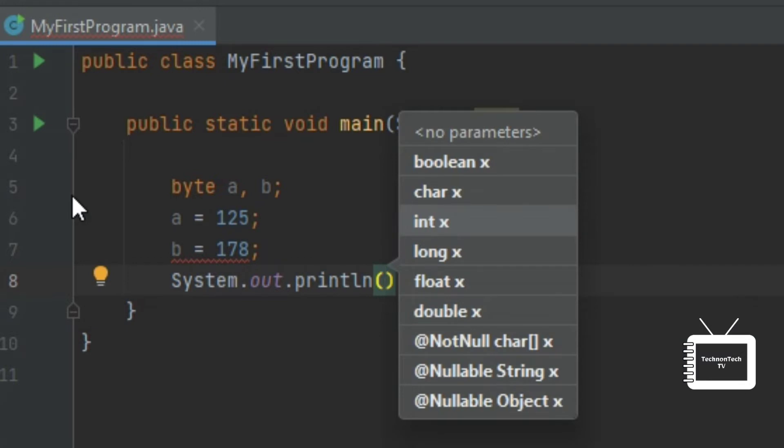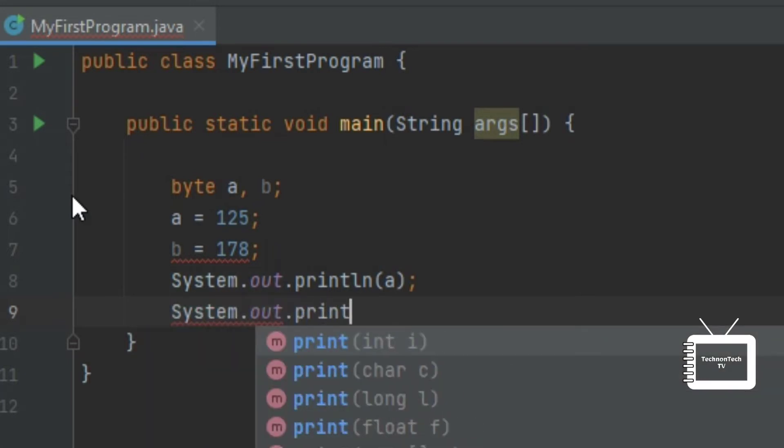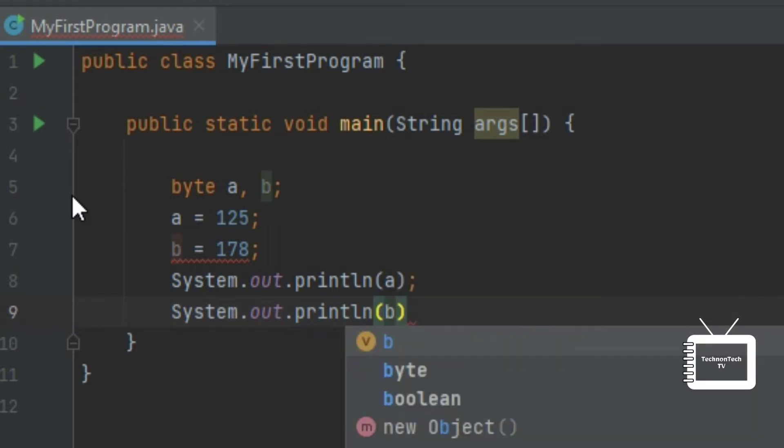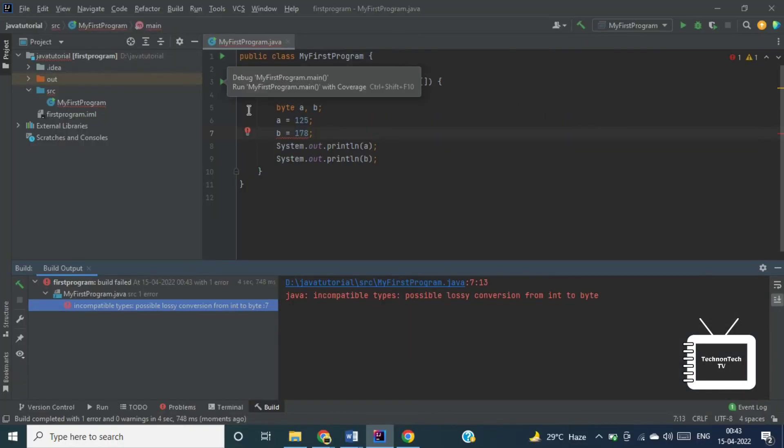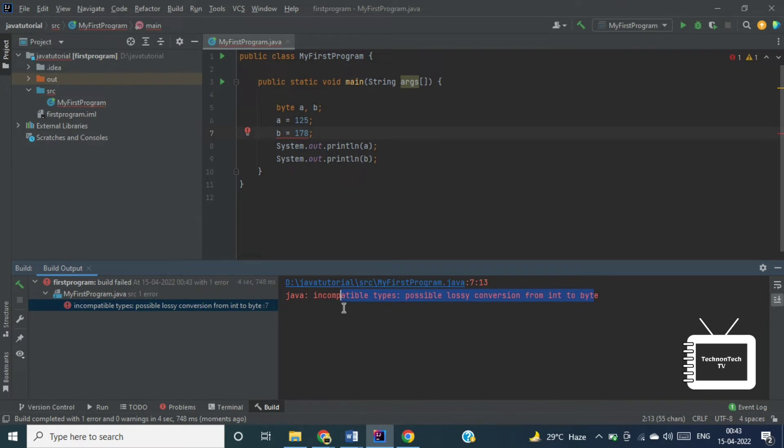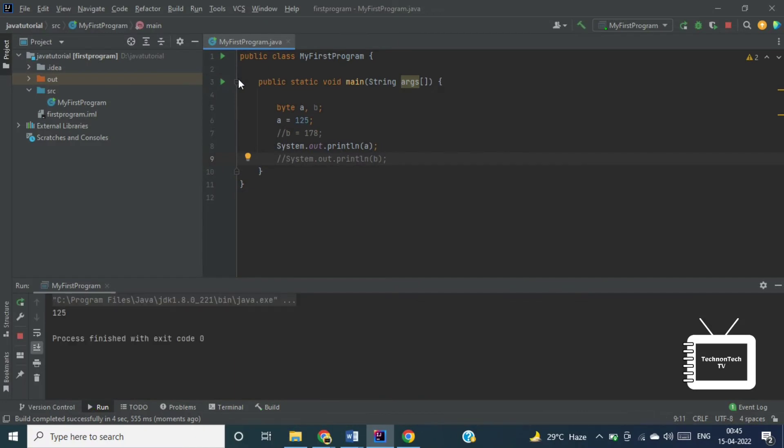So this statement will print value of a that is 125, and this line will throw an error because it stored more than 127 bits. So if we run this program we'll get this error because variable b is storing more than 127 bits. So let's comment this line and now if we try to run then value of variable a will be displayed.